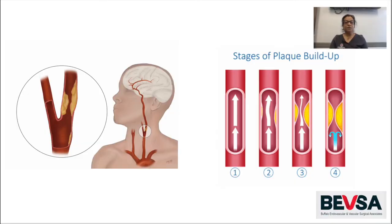The carotid arteries are a set of arteries that travel up your neck and deliver blood and oxygen to your brain and head. As we age, our blood vessels tend to build up fatty deposits or plaque, which can limit blood flow. The narrowing of blood vessels in the carotid arteries due to plaque is called carotid disease. Usually, carotid disease does not have any associated symptoms. However, narrowing in the arteries can become significant enough to limit blood flow and oxygen to the brain and increase the risk of stroke.